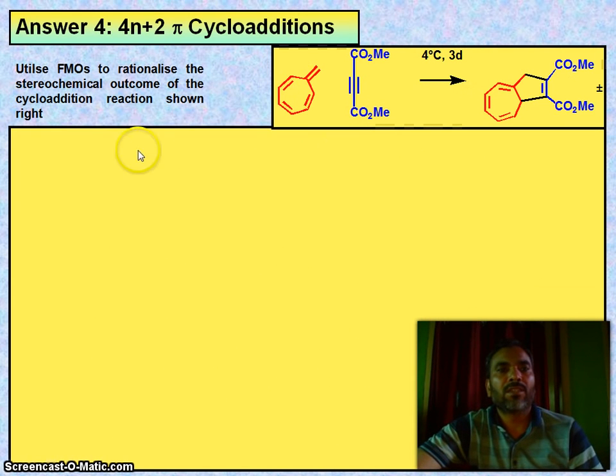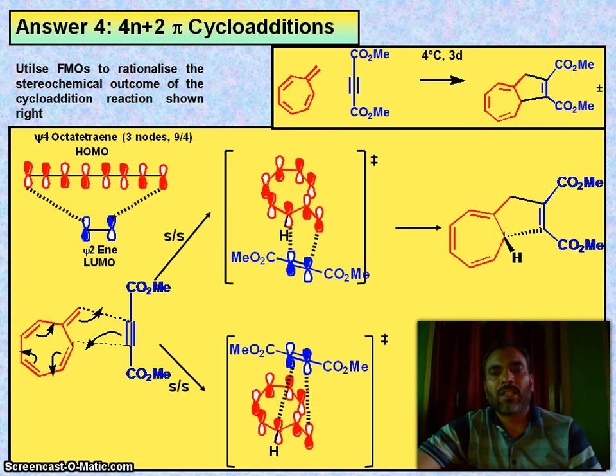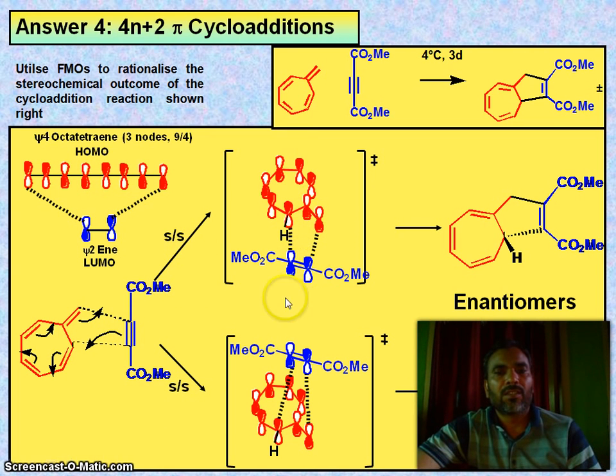So now utilize the FMO to rationalize the stereochemical outcome of the cycloaddition condition shown right. How many electrons? Look at here. Total 2, 2, 2, 2, 2 here, 2. So 10. So supra-supra in HOMO and supra-supra. You see, and you will get this enantiomer.